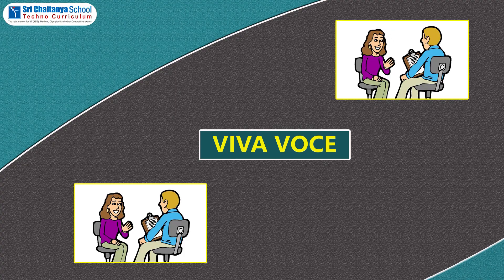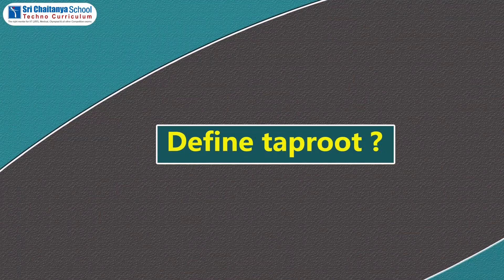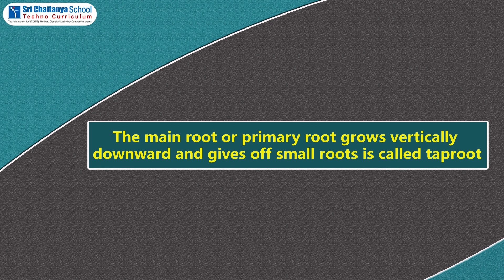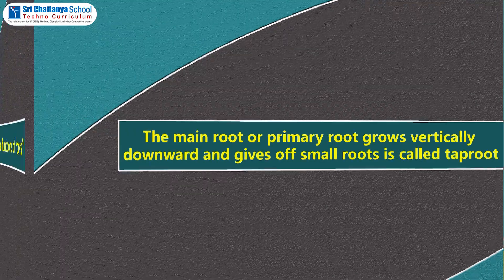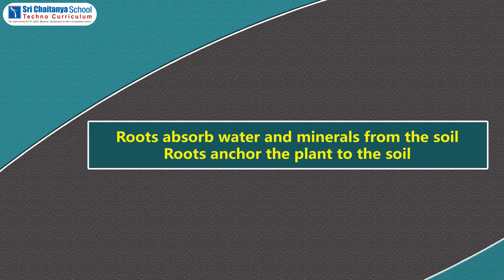Based on this roots observation, I pose a few questions. Define tap root. The main root or primary root that grows vertically downward and gives out small roots is called the tap root. Another question: mention the functions of roots. Roots absorb water and minerals from the soil. Roots anchor the plant to the soil.